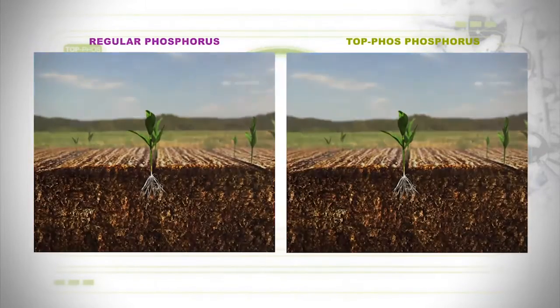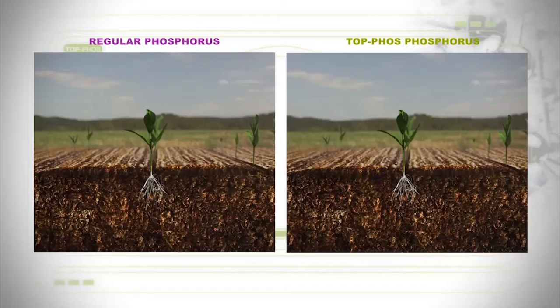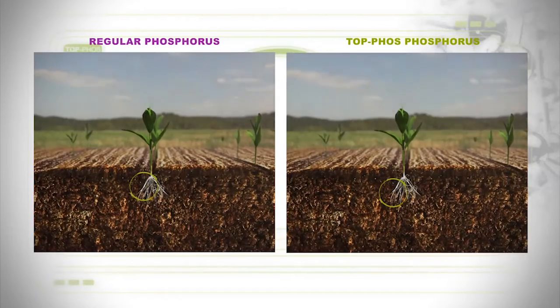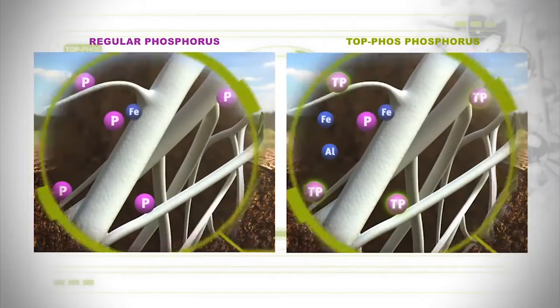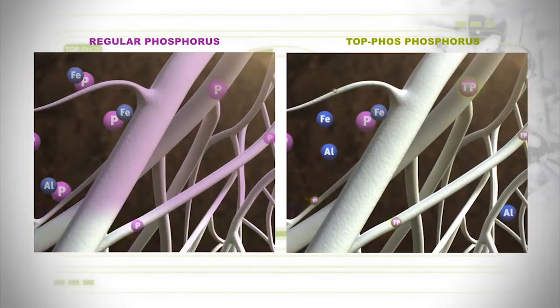When we work with normal phosphate, we have around 30 percent of efficiency. But when we have Topphos, because of this, due to this complexation of phosphate, we have an efficiency that can achieve around 90 percent.